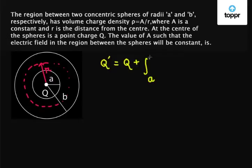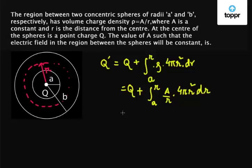So we write the integral A to R into rho into the area, that is the surface area of the sphere, which is 4 pi r squared dr, which is the infinitesimal thickness of the sphere. So we have Q plus integral A to R. Now rho is A upon R into 4 pi r squared into dr. Solving this we get Q plus 2 pi capital A into r squared minus 2 pi capital A into small a squared.